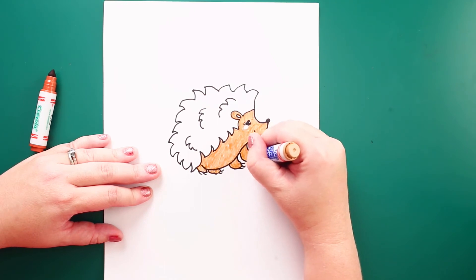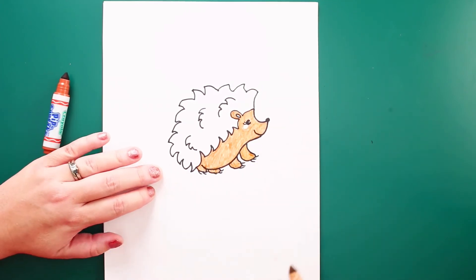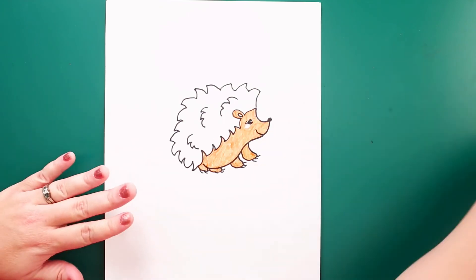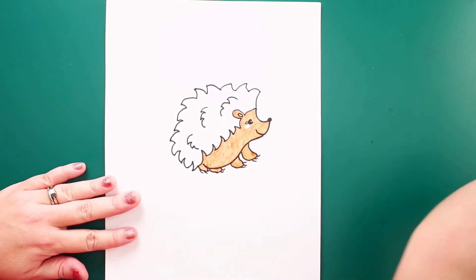Okay, we've got her under color. She looks great. Okay, I'm going to do the spines on her, this darker color.